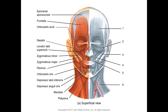The sternocleidomastoid is called that because it runs diagonally from the sternum and clavicle to the mastoid process of the temporal bone. Understanding muscle names helps you know where the muscle is located and what it does. Going through the labeled muscles: epicranial aponeurosis, frontalis, orbicularis oculi, nasalis — which helps elevate the nose — and levator labii superioris, which as the name says elevates the lips.